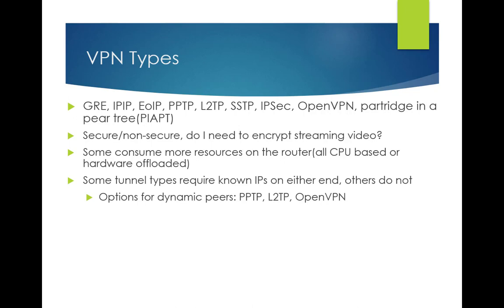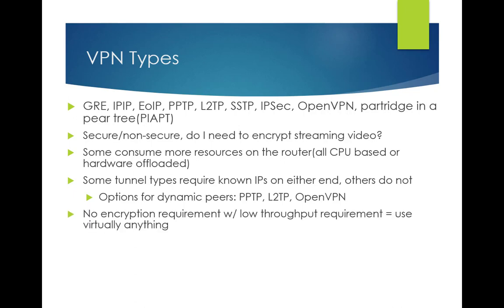Some tunnel types also require the endpoints to have known IPs — GRE tunnels really want you to know what the IP is on both sides. Good dynamic peer options are going to be PPTP, L2TP, OpenVPN, things like that. For me, I really don't care about encryption. There's really low throughput — maybe a few megabits per second for streaming — so I can use any tunneling technology. I'm going to use the least resource-intensive one.